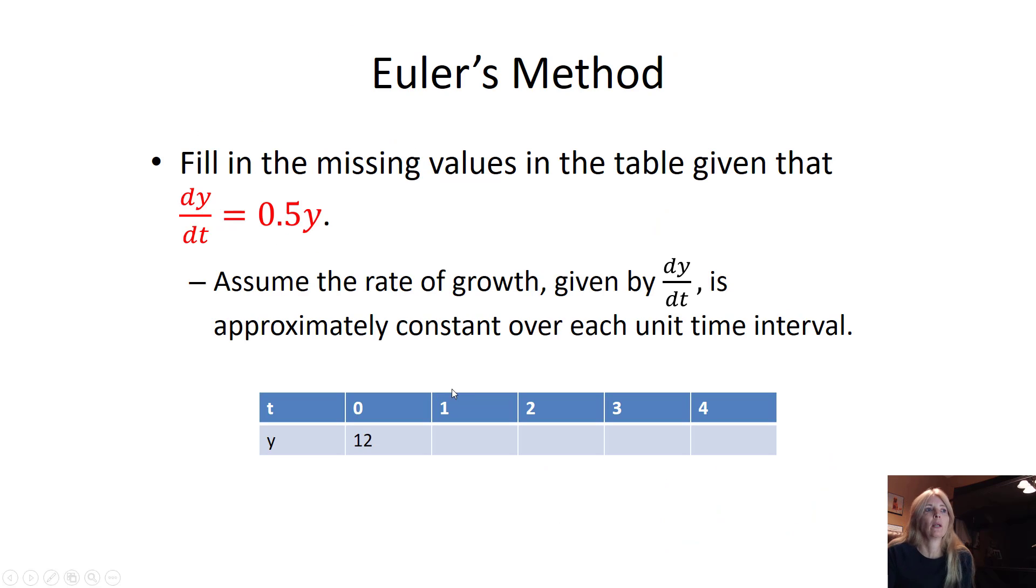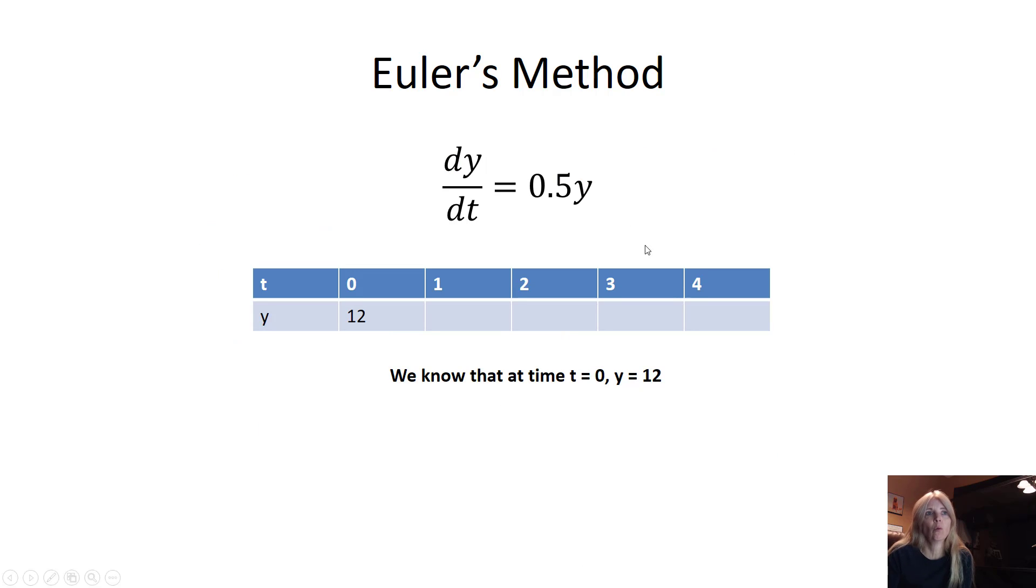Alright, the last part is back to Euler's method. It says find the missing values into this table, given that I have a differential equation. So dy/dt equals 50% of whatever this value is. Assume the rate of growth is given by this approximately, is approximately constant. So in other words, we're not going to change my growth rate over time. I'm going to say at the beginning, that's my growth rate. So we know at t equals 0, y equals 12. So I could put that one in. Then I update this. So I plug in 12, where I see y. That tells me my rate from 0 to 1 is going to be now a rate of 6. So 12 plus 6, I get 18.